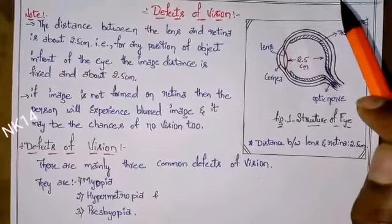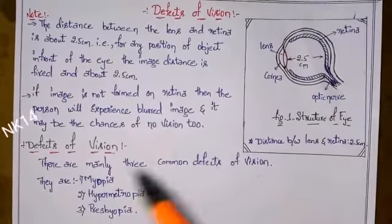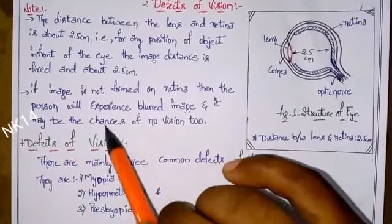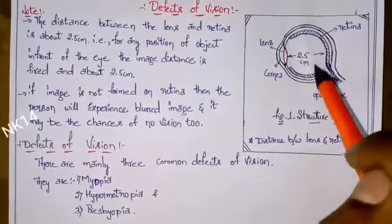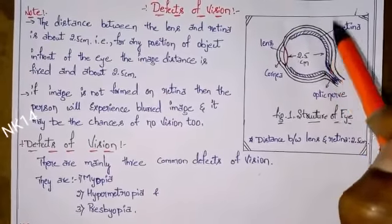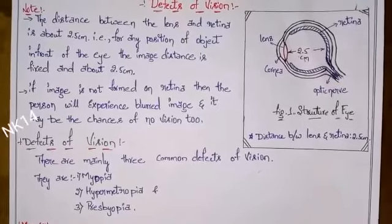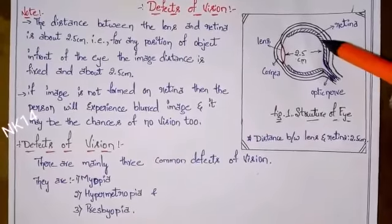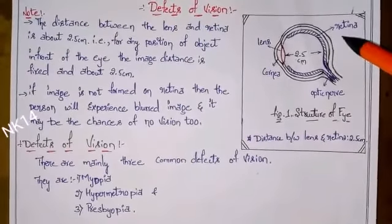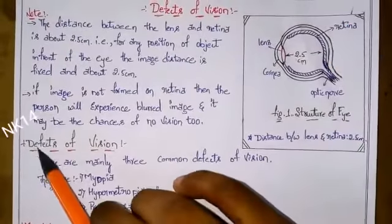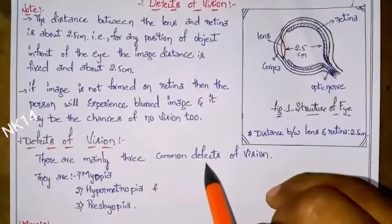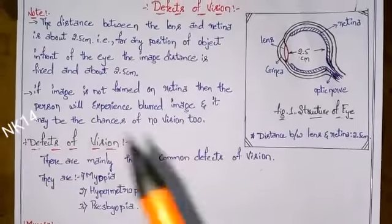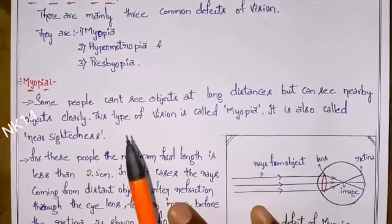If the image is not formed on the retina, the person will experience a blurred image, and in some cases there may be no vision at all. If the defect increases, the person cannot see the image at all. There are mainly three common defects of vision: myopia, hypermetropia, and presbyopia.